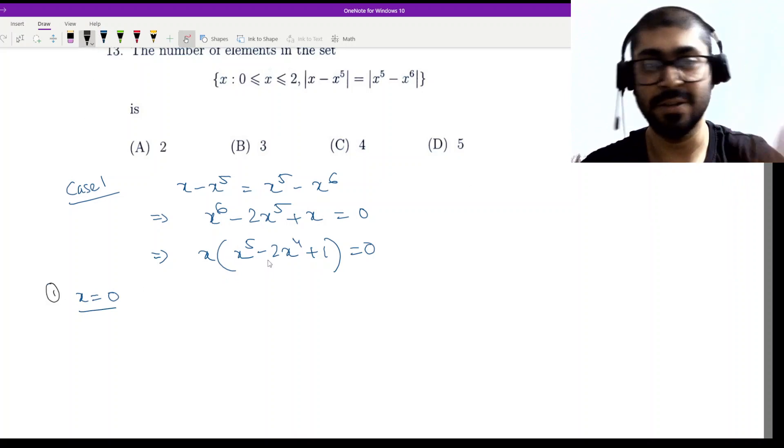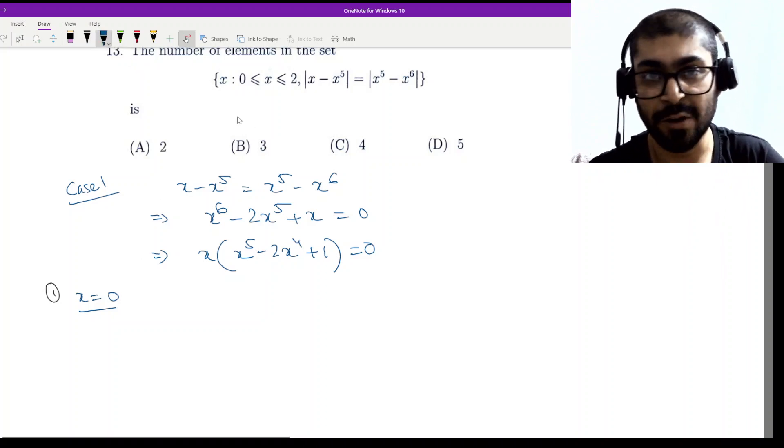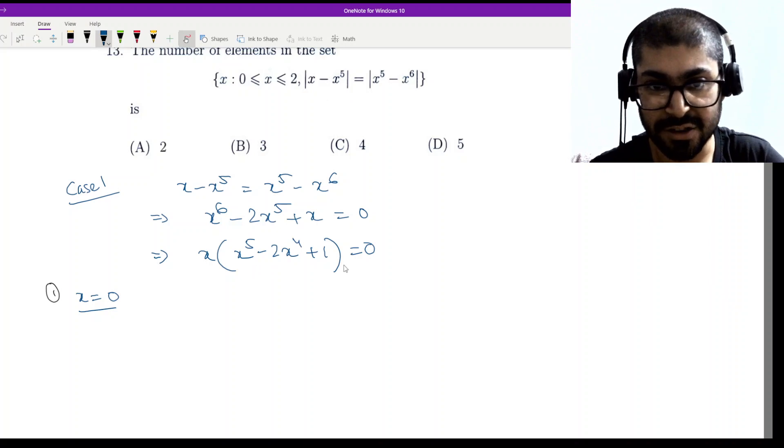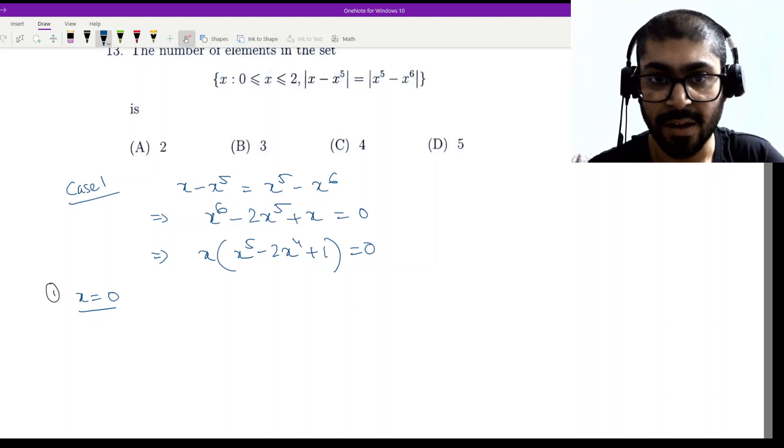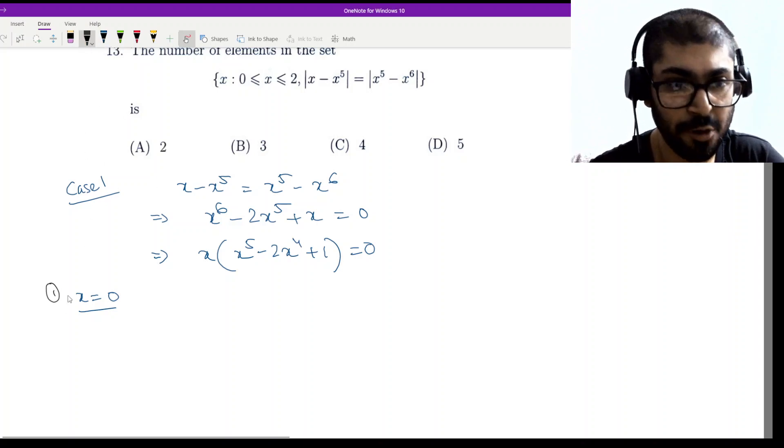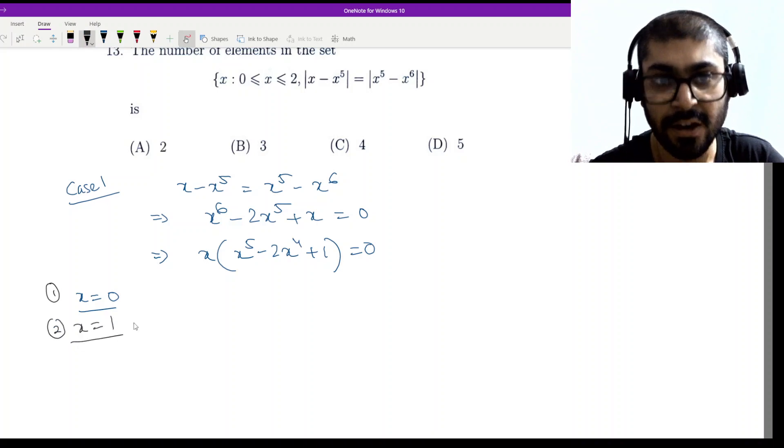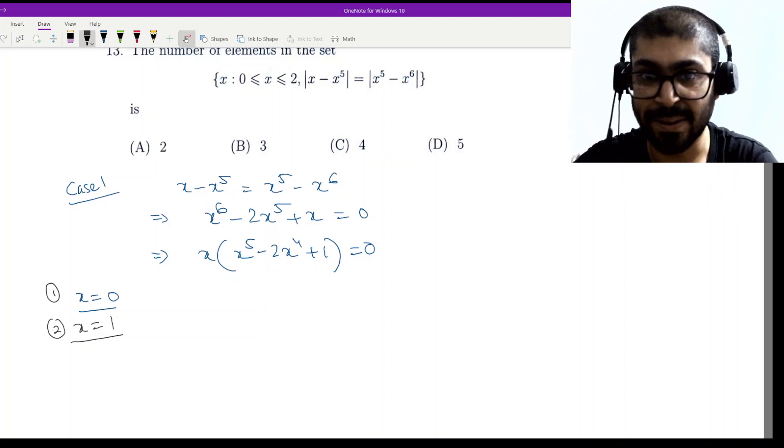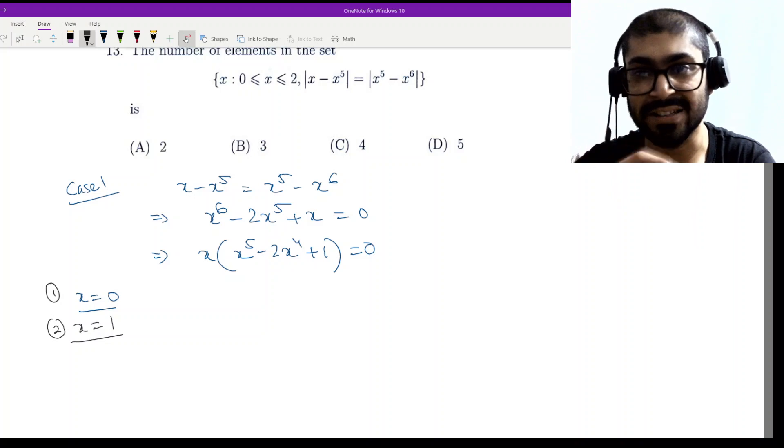From here we get one solution as x equal to 0. That solution is fixed, so our counter is now 1. Now x to the power 5 minus 2x to the power 4 plus 1 is a quintic equation. So what we will check? We will check the integers. We check 0, already done. Then 1 - we get 1 to the power 6 minus 2 plus 1 equal to 0. Yes, x equal to 1 is a solution. Now x equal to 2, we check - no, that's not a solution. But since x to the power 5 is there, maximum of 5 solutions here. We have only discovered x equal to 0 and 1.